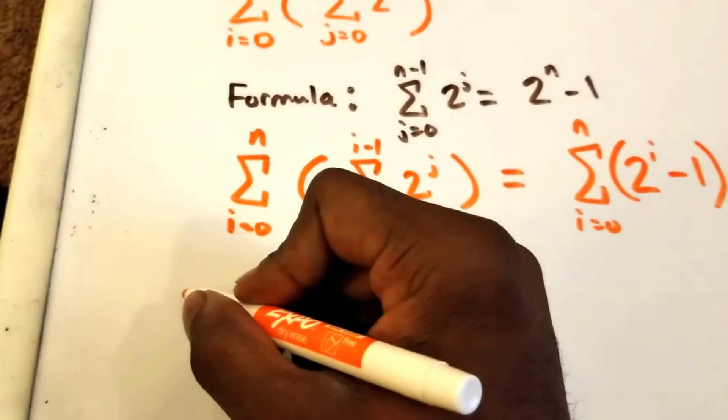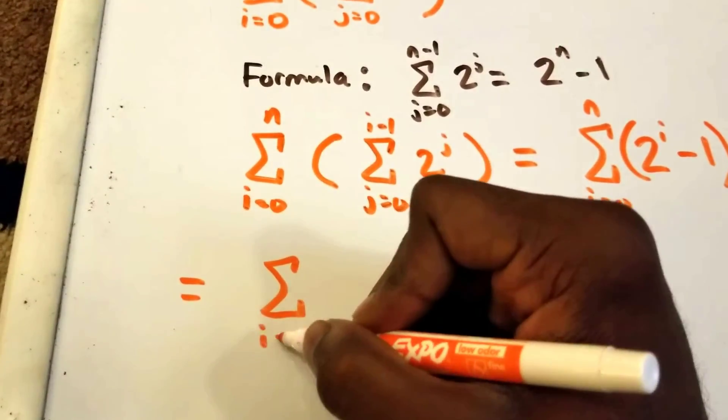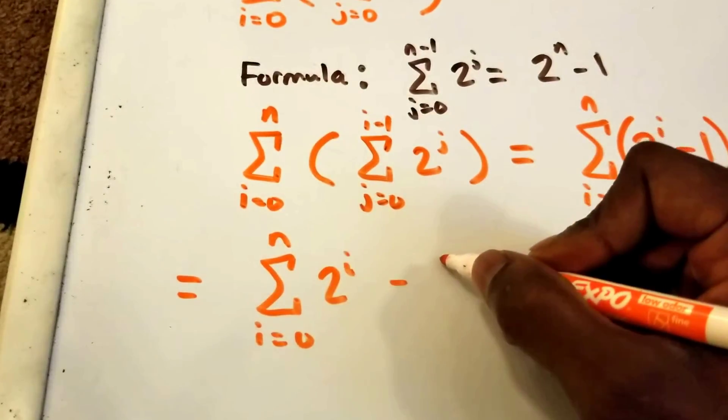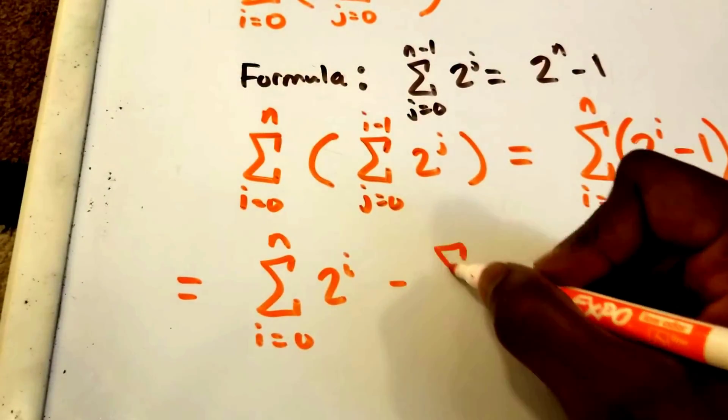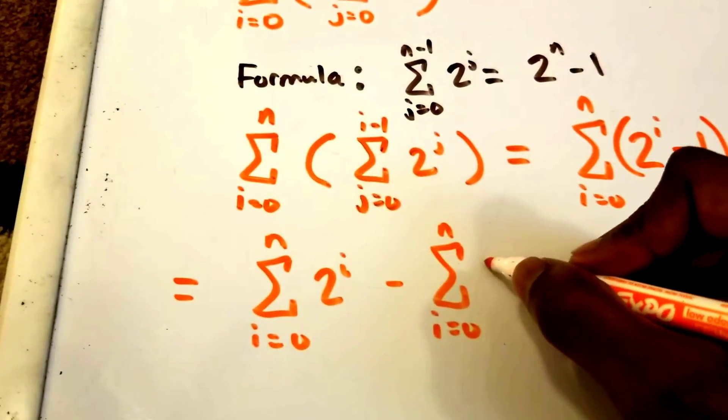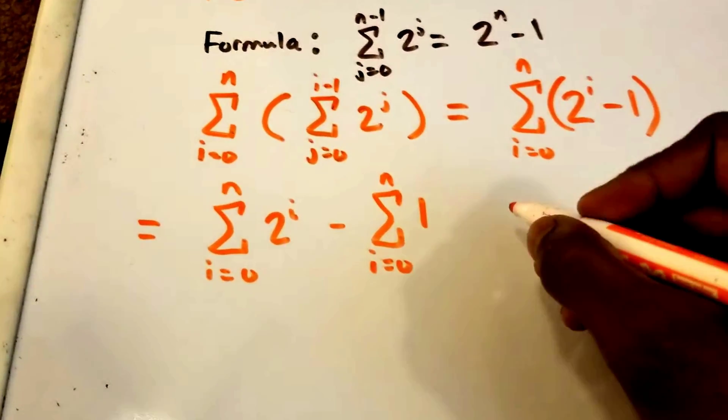Next we're going to use the summation properties to split this up. So we have the summation from i equals 0 to n of 2 to the power of i, minus the summation from i equals 0 to n of 1.